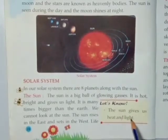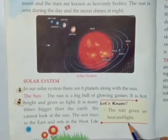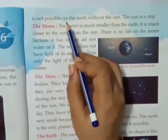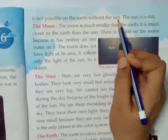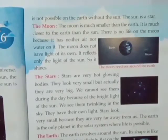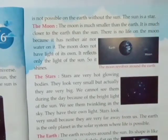The sun gives us heat and light. Yeh abhi humnay yaha bhi pada — heat bhi deta hai, garmi deta hai, aur light yaani roshni deta hai. Life is not possible on the earth without the sun. Earth par sun ke bina life possible nahi hai. Agar aapko dhoop nahi milegi, garmi nahi milegi, roshni nahi milegi, tau life ke liye bhoat mushkil hai. The sun is a star — sun ek star hai, tara.